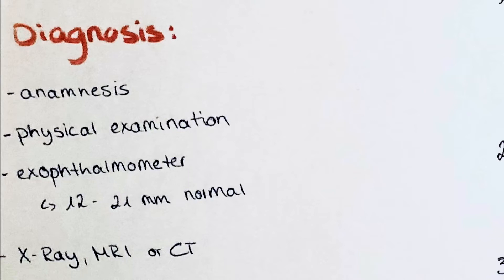The normal range is from 12 to 21 millimeters, with the average for women being 15 to 17 millimeters and for men 16 to 18 millimeters. Also the difference between the right eye and the left eye is measured — if it is greater than 2 millimeters, it is considered abnormal.